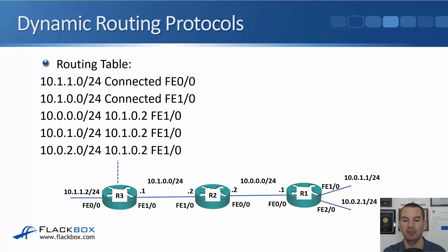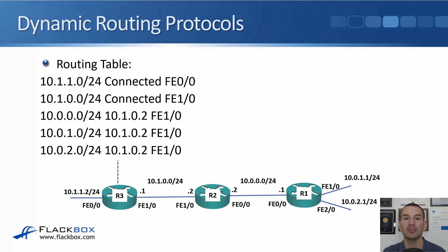Just like with static routes, R3 does not see R1 as the next hop because it's not directly connected to it. The next hop is always going to be reachable on a directly connected interface — that's R2 in this example. So that was how routes got propagated from right to left, from R1 to R2 and then on to R3. Obviously the same thing happens in the opposite direction, where R3 advertises its routes to R2, which then advertises them on to R1, so all routes everywhere are advertised everywhere.